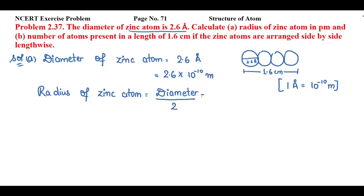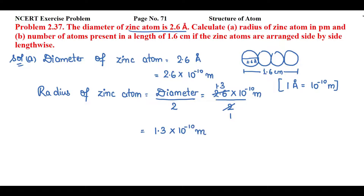So, diameter divided by 2: the diameter is 2.6 into 10 raised to the power minus 10 meter, divided by 2, which gives 1.3 into 10 raised to the power minus 10 meter. But our main question is to find the radius of zinc atom in picometer. Now, 1 picometer is equal to 10 raised to the power minus 12 meter.